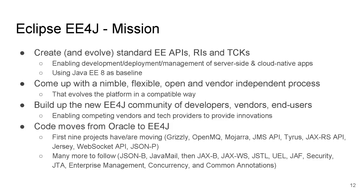Moving just the code and the reference implementations and TCKs to the Eclipse Foundation but leaving everything under the control of the JCP wouldn't achieve what we want. So we are working upstream — completely open, no behind-closed-doors efforts — to define a new process that allows everybody to have a say in how these specs and implementations evolve. One of the biggest things we're doing is lifting and shifting all of the existing code — things like Grizzly and Jersey, big code bases that power a lot of industries today — and re-licensing them to the Eclipse Foundation.